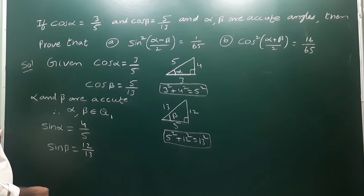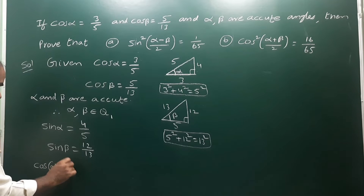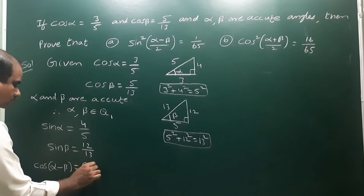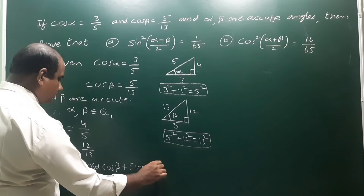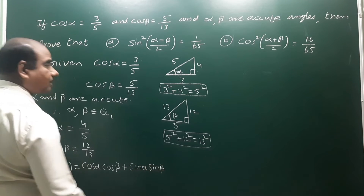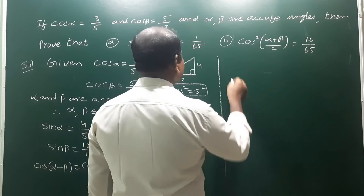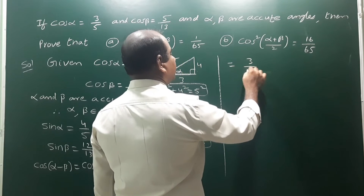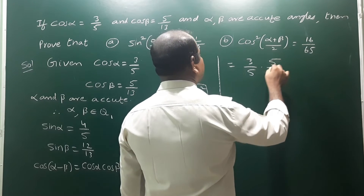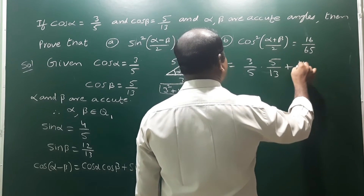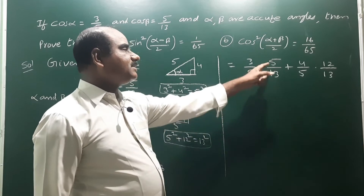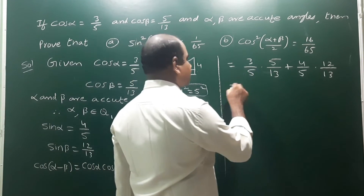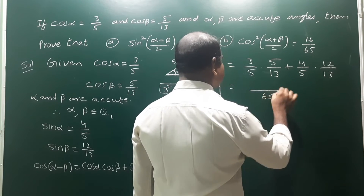Now we find cos(α−β) = cos α cos β + sin α sin β = (3/5)(5/13) + (4/5)(12/13). The LCM is 65. This gives 15/65 + 48/65 = 63/65. So cos(α−β) = 63/65.